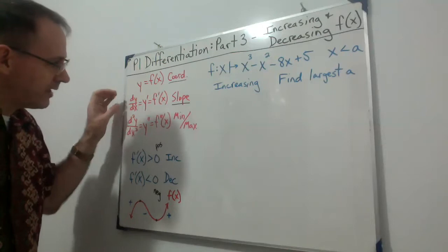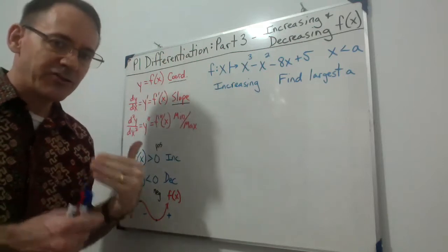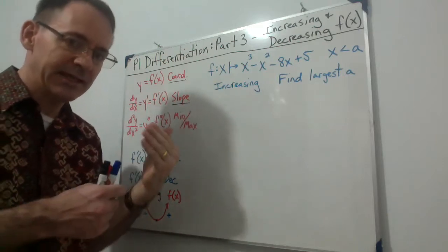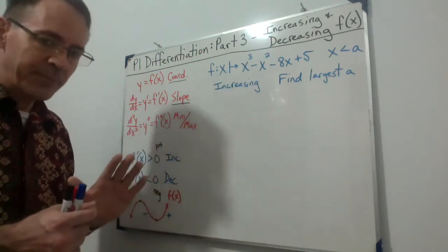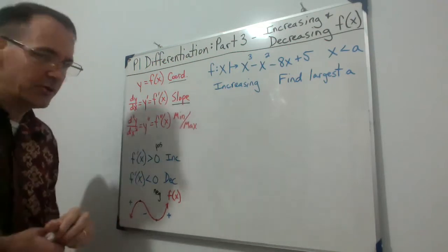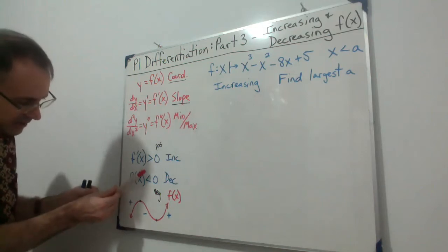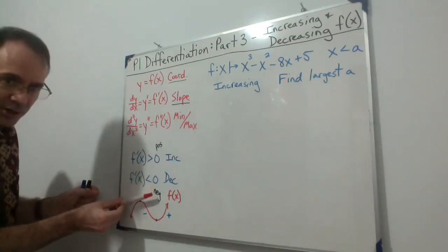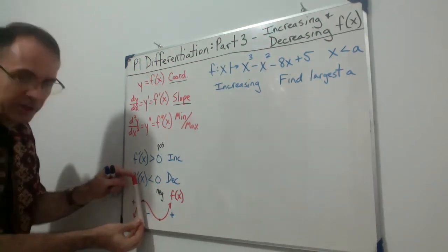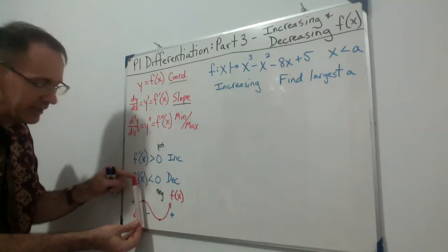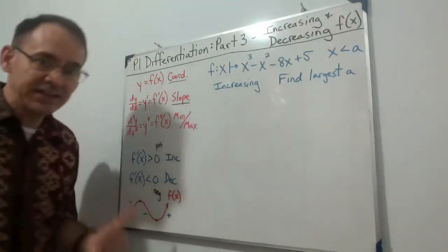We've been looking at applications with respect to slope. In Part 2 we saw that slope can be used in tangent lines and normal lines — the slope of the tangent to the curve and the normal to the curve. Now we're still going to look at slope, but instead of tangent or normal lines, we're going to look at the curve in terms of increasing or decreasing.